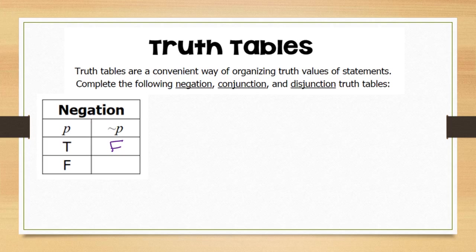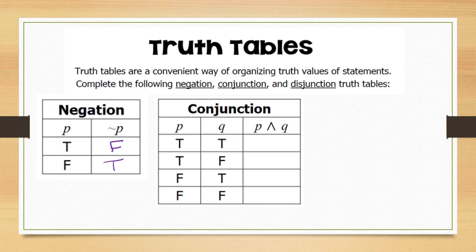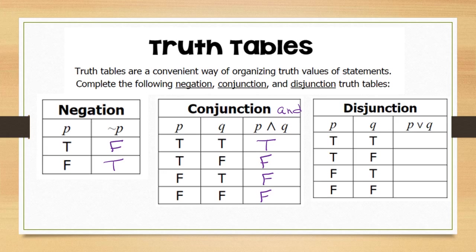If our original statement is false and we take the opposite, we get true. For conjunctions — using the word 'and' — true and true gives true. However, if any statement is false, the conjunction is false: true and false is false, false and true is false, and false and false is false.